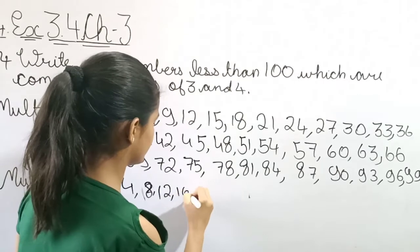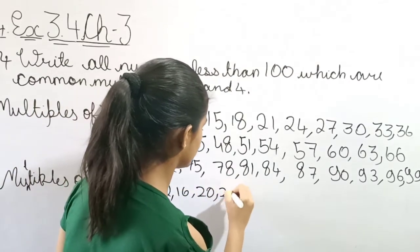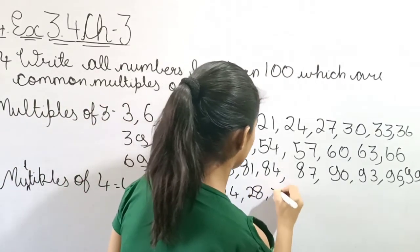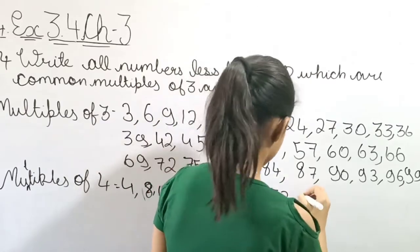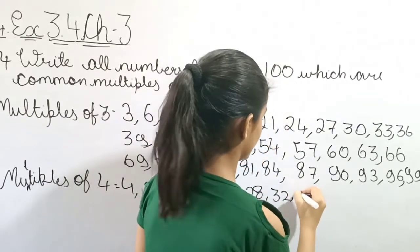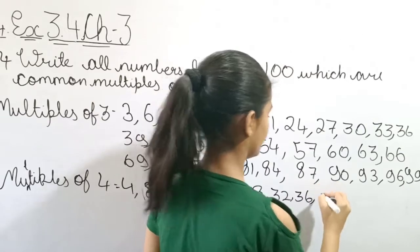4 threes are 12, 4 fours are 16, 4 fives are 20, 4 sixes are 24, 4 sevens are 28, 4 eights are 32, 4 nines are 36, 4 tens are 40.